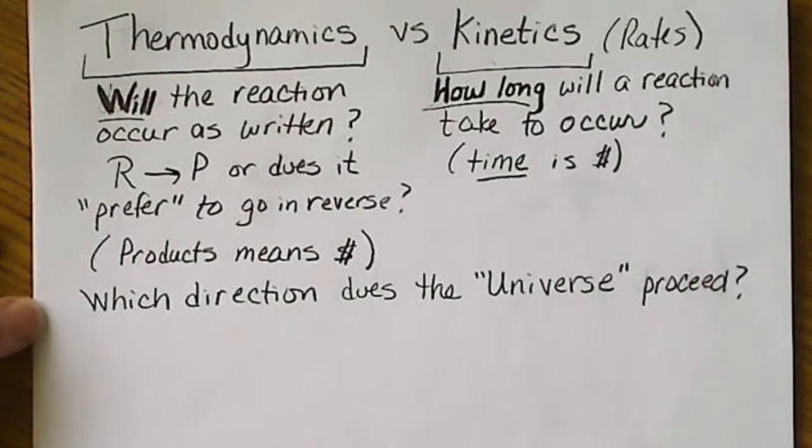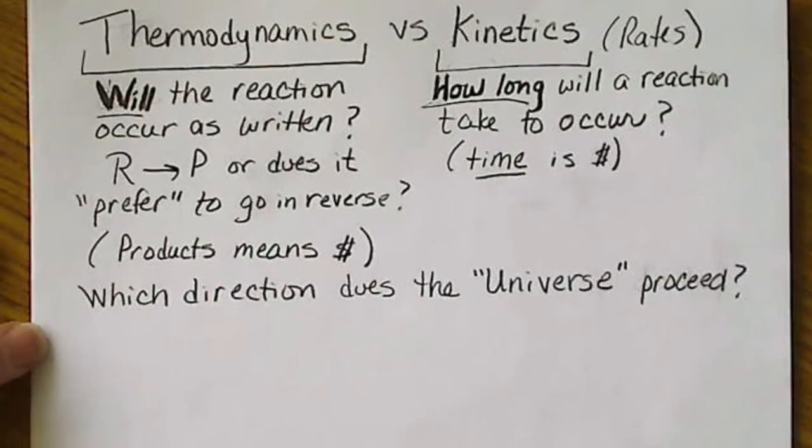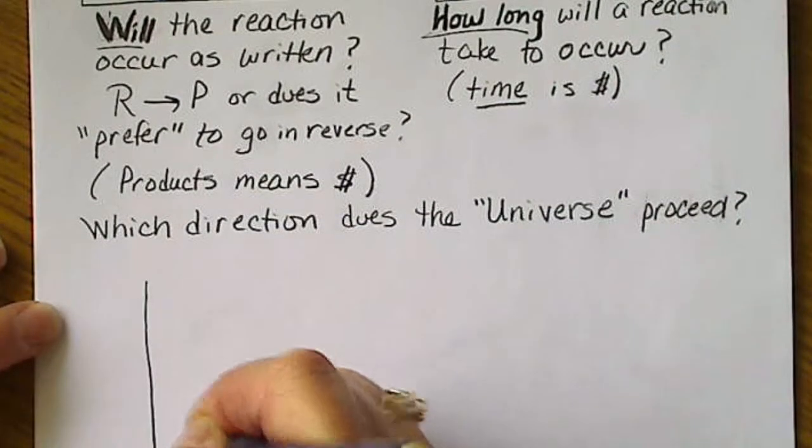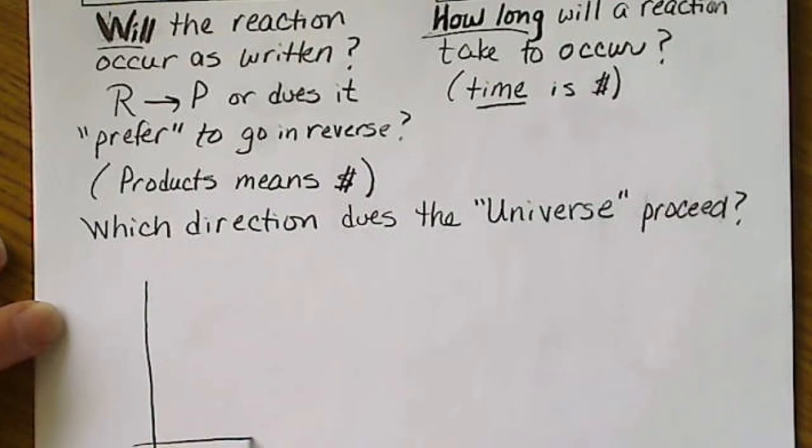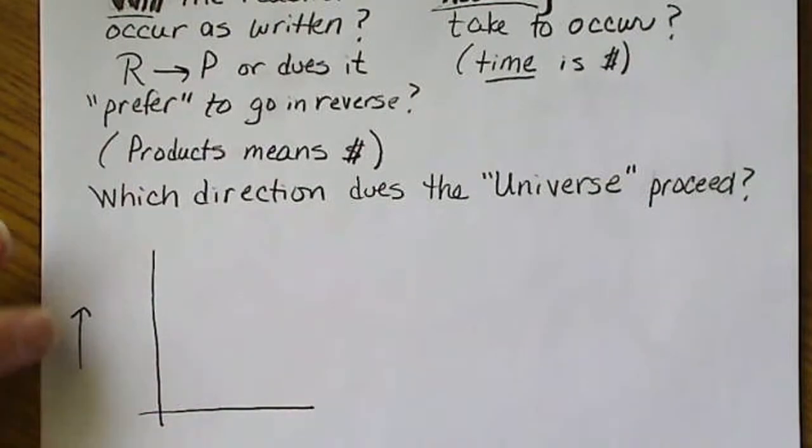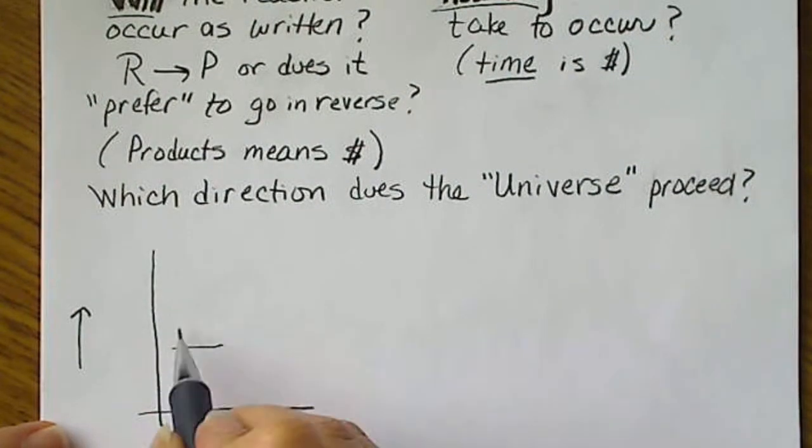So first I want to remind us of an endothermic reaction versus an exothermic reaction. For example, we have a reaction that overall goes downhill in energy, so our energy is increasing in this direction.